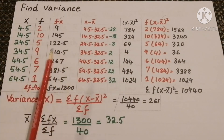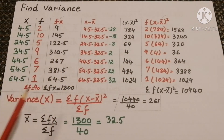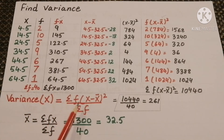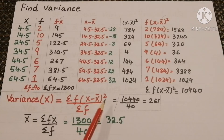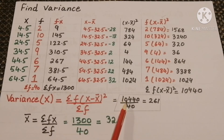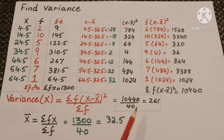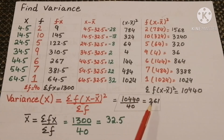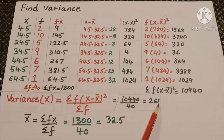Hope you have understood the making of the columns and multiplying them. For variance of x, which equals sum of f(x minus x̄)² divided by sum of f, we substitute the values: 10440 divided by 40, giving us variance = 261.